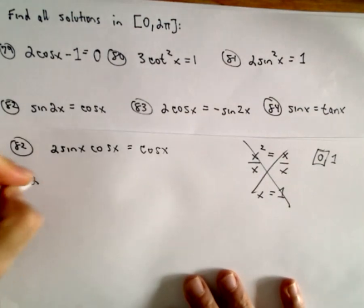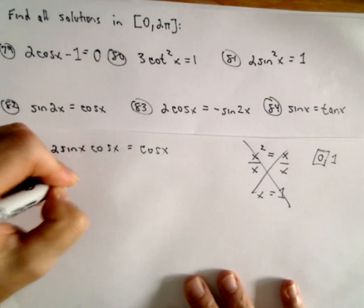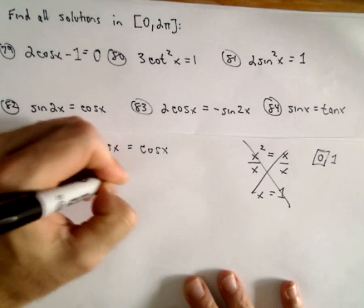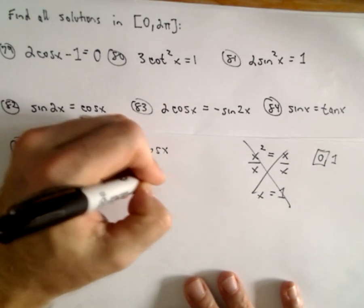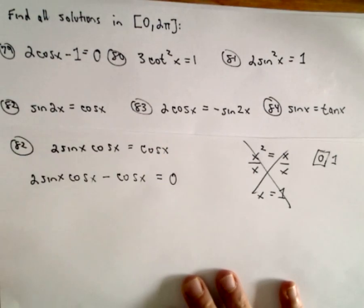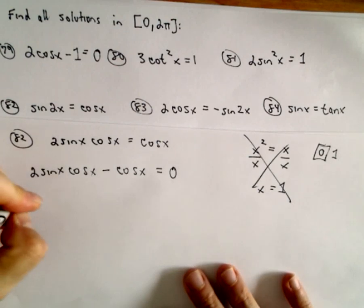So what you do want to do is just make one side 0. And again, that's kind of a rule of thumb for solving equations in general - you just make one side 0 and try to factor.